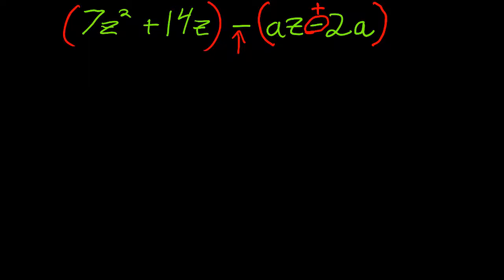I'm going to factor out the GCF of the first two terms and the second two terms, just like I did before. Both of these terms contain a seven and a Z, because 14 is seven times two.